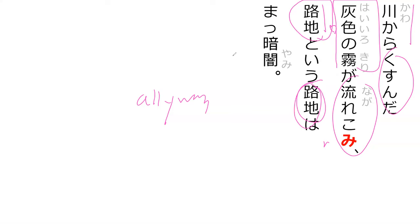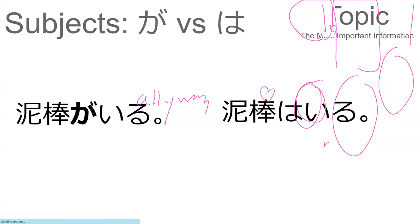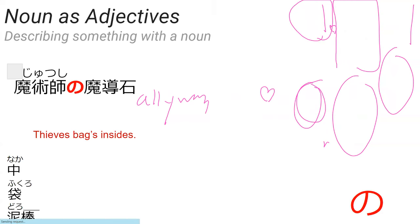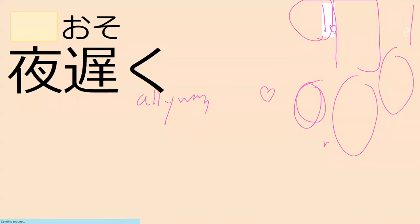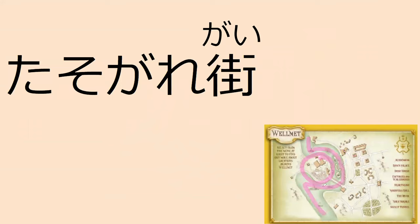So the most important information is probably how dark it is. Basically: from the river we have a gray fog that flows into all the alleyways, and all those alleyways in Tasararegai — the district of twilight — have a really dark fog in them and are very dim.